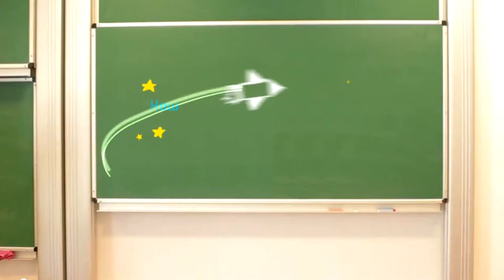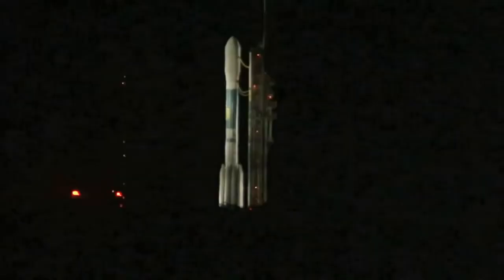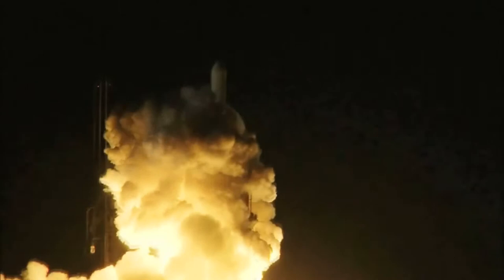Three, seven, six, five, four, three, two, engine start, one, zero, and liftoff of the Delta II rocket with Kepler on a search for planets in some way like our own.